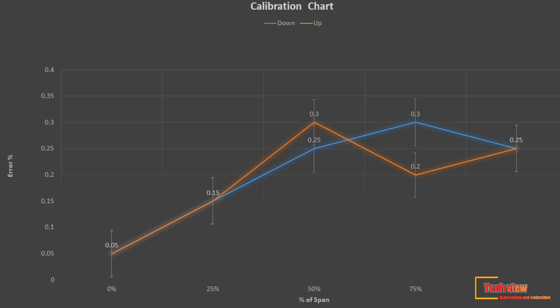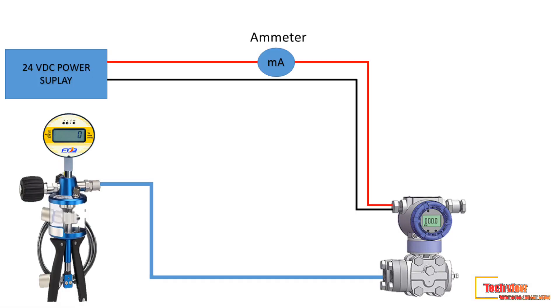For the calibration, we have to simulate the pressure to the transmitter using accurate calibration equipment like hand pump with pressure gauge or a process calibrator. Then the output current is to be measured using a current meter. For that we have to adjust the zero and span.